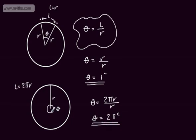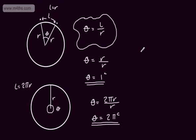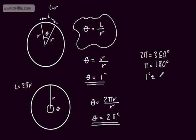Since that angle is 360 degrees, we can make conversions: 2π radians equals 360 degrees, therefore π radians equals 180 degrees, and 1 radian is approximately equal to 57.3 degrees. So 2π radians is 360 degrees, π radians is 180 degrees, and 1 radian is approximately 57.3 degrees.